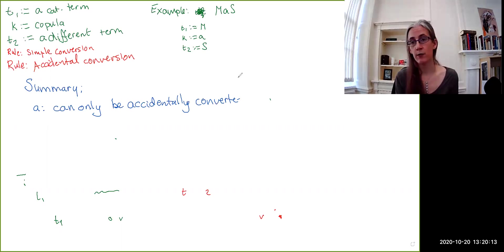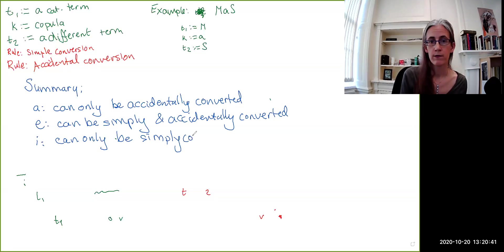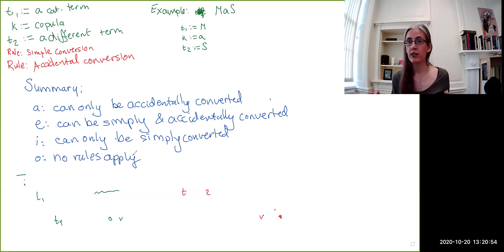There we go. Summary of the transformation rules. A claims can only be accidentally converted. They cannot be simply converted. E claims can be simply and accidentally converted. They are the only one that both rules apply to. Then we have I claims can only be simply converted. And lastly, we have the O claim and you might have seen already that no rules apply to the O claims. So, our transformation rules cannot do anything with the O claims.